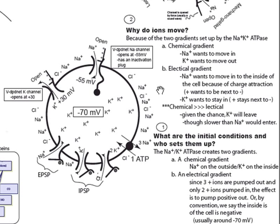Now if you put the chemical gradient and the electrical gradient together, the chemical gradient is going to be much stronger than the electrical gradient, and so potassium is going to leave.